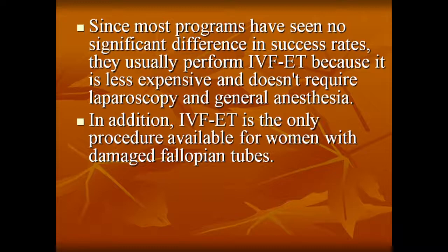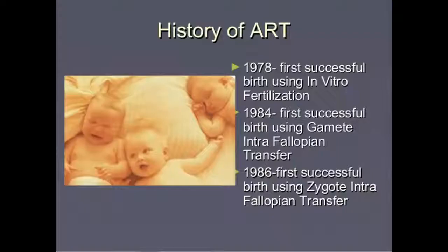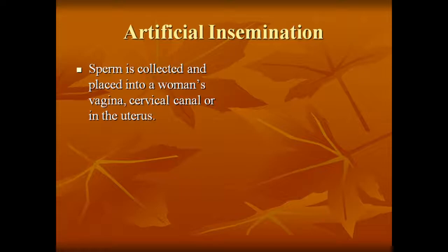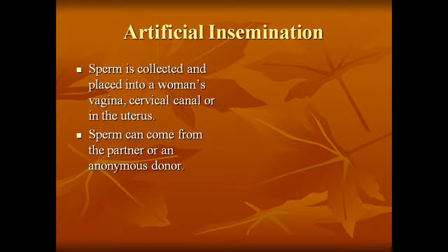History of ART: in 1978, successful birth using in vitro fertilization; in 1984, successful birth using gamete intrafallopian transfer; in 1986, the first successful births using zygote intrafallopian transfer. Artificial insemination: the sperm is collected and placed into the woman's vagina, cervical canal, or into the uterus. The sperm can come from a partner or from an anonymous donor.